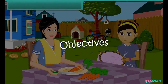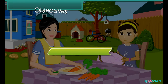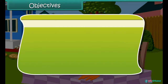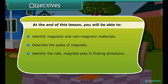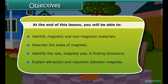Objectives. At the end of this lesson, you'll be able to: identify magnetic and non-magnetic materials, describe the poles of magnets, identify the role magnets play in finding directions, and explain the property of attraction and repulsion between magnets.